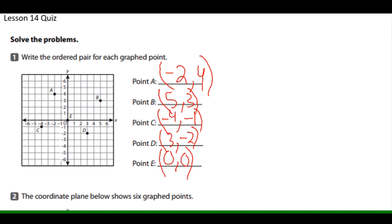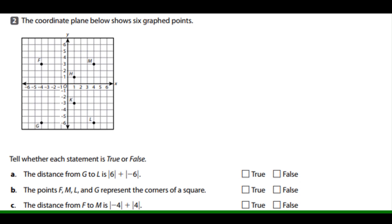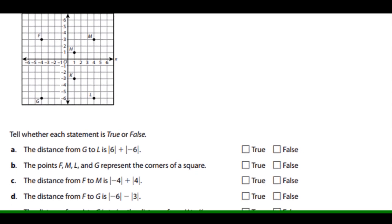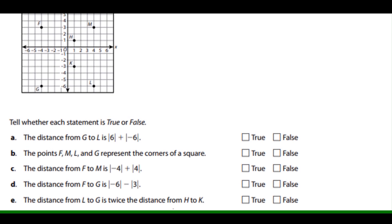Number two: the coordinate line below shows six graphed points. We want to answer true or false for each statement. Statement A: the distance from G to L is 6. Look at the absolute values — positive 6 and negative 6. Go on the grid, find G and L right there.